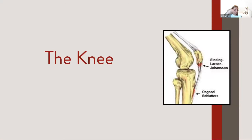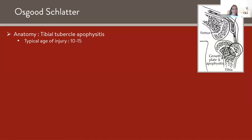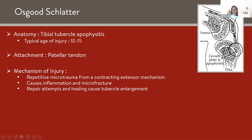Moving on to the knee. Osgood-Schlatter is the most common. The tibial tubercle apophysis is on the front of the knee; it's injured from ages ten to fifteen, typically. The patellar tendon attaches here and exerts a pulling force superiorly on that apophysis. The mechanism is repetitive microtrauma, inflammation, and microfracture — as the body tries to repair it, it causes enlargement of the tubercle. This is one of the few injuries that leads to long-term physical deformity visible at the tibial tubercle. Risk factors include rapid growth, sudden increase in squats, lunges, and plyometrics, and tight hip flexors and quads from prolonged sitting.